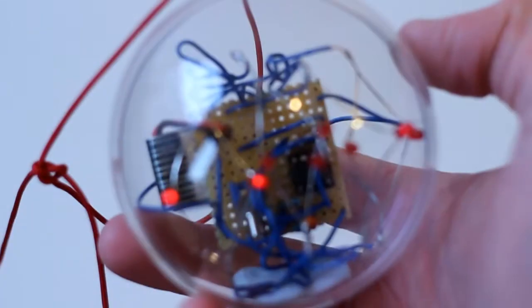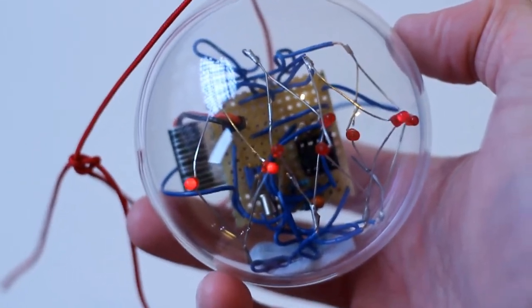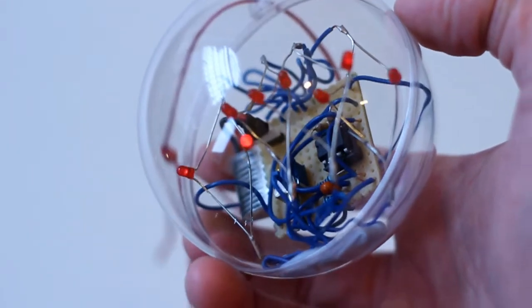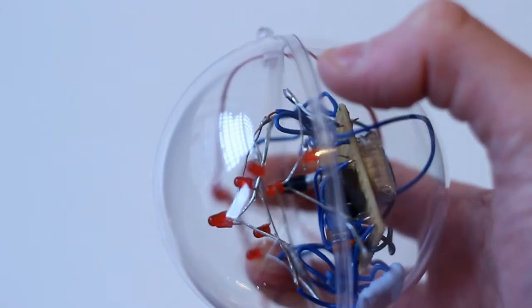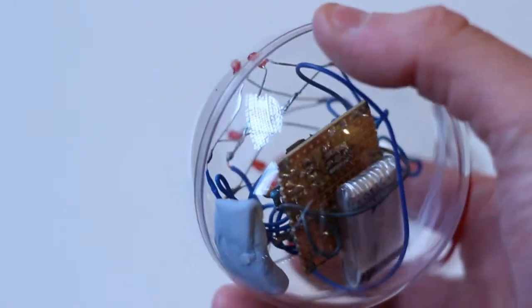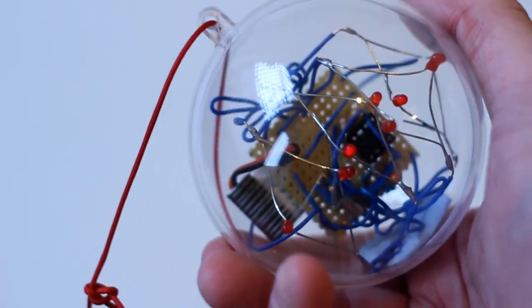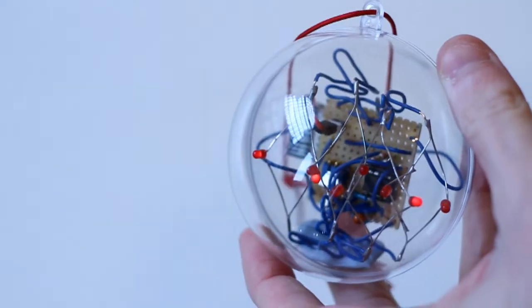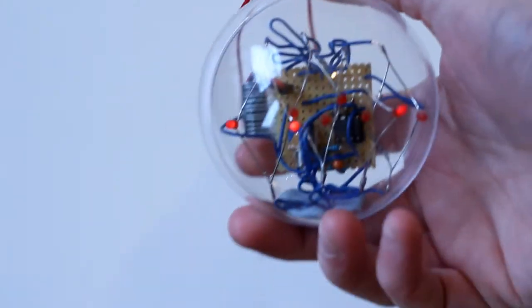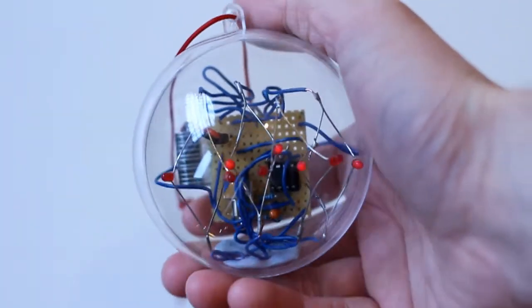It just flashes alternating between two LEDs. That's the output pin triggering high and low. I'm going to show you how to make this. I've put it in a nice little clear bauble, so it looks nice, and it's just a bit of a nerdy Christmas tree object you can have.